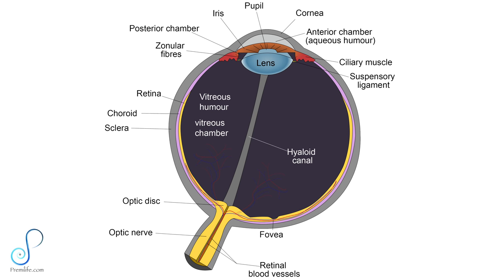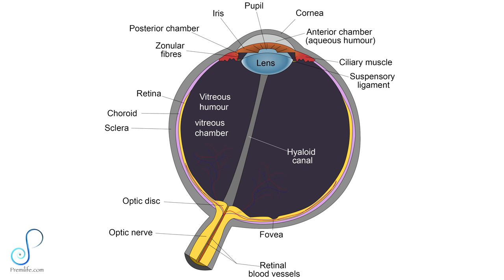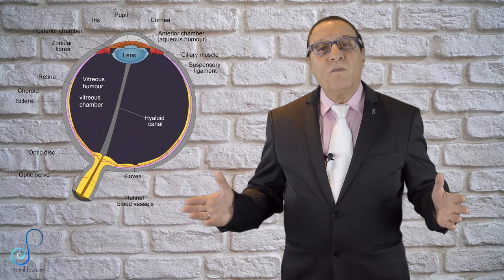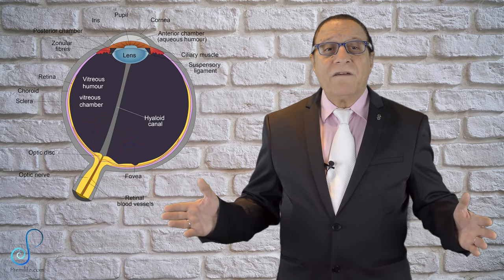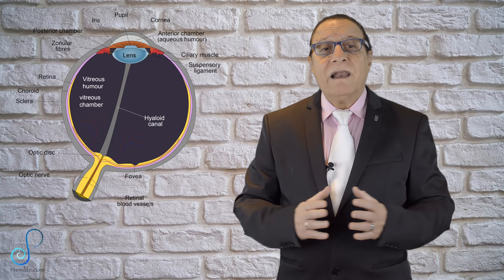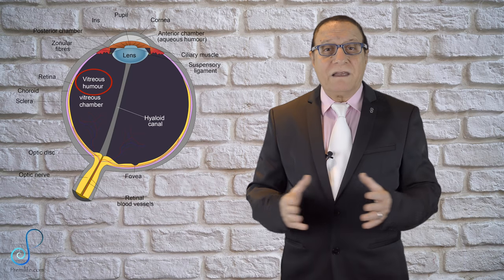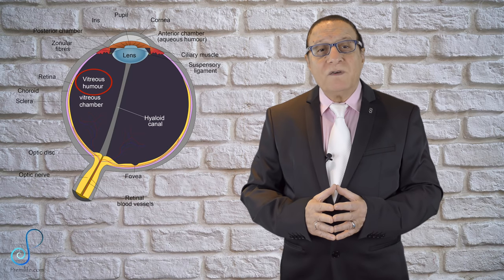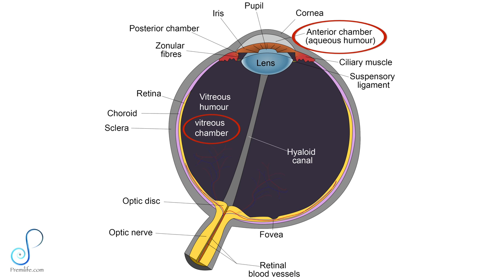The vitreous chamber is the largest, occupying 80% of the eye. It is filled with vitreous humor and located in the back of the eye. It aids in maintaining the round shape and the pressure it exerts on the retina keeps it in position. The vitreous humor is a transparent, gelatinous, and colorless mass that occupies the space between the retina and the lens. It is surrounded by a layer of collagen known as the vitreous membrane. 99% of the vitreous is water, and the rest is constituted by proteins, collagen, sugars, and salts. This is different from the aqueous humor in the frontal parts of the eye, which is replaced continually — the gel in the vitreous chamber does not change.